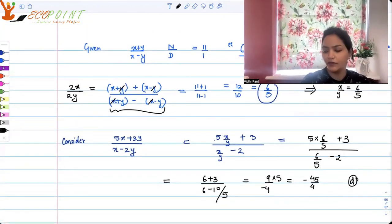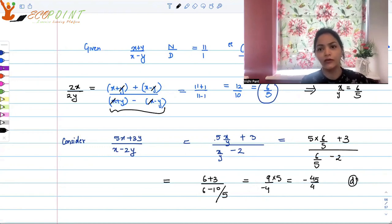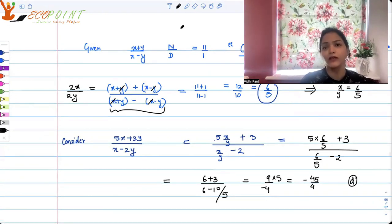This is how you have to work in the questions which are related to ratio and proportion. With some manipulation, you will use the given information in order to find out the information that they're asking in the question. I hope this will help.